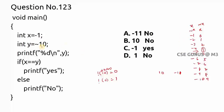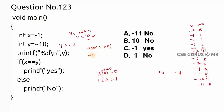If y equals tilde of 10, y value will become minus 11. And tilde of minus 11, y value will become 10 — that is the opposite numbers. So tilde of 200 will be minus 201, and tilde of minus 201 will become 200. Like this, the output will be given.